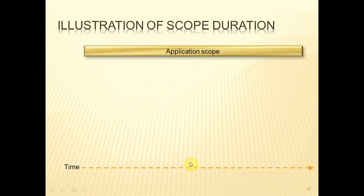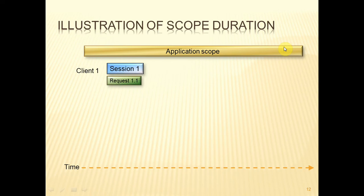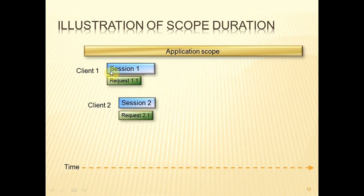Here's an illustration of scope duration, with time progressing from left to right. We're assuming the application remains active for the entirety of that time, so the application scope exists throughout the time period. Client number one sends in a request — Request 1.1 — and that creates a session. Because the session for Client One has not yet timed out, that session still exists.